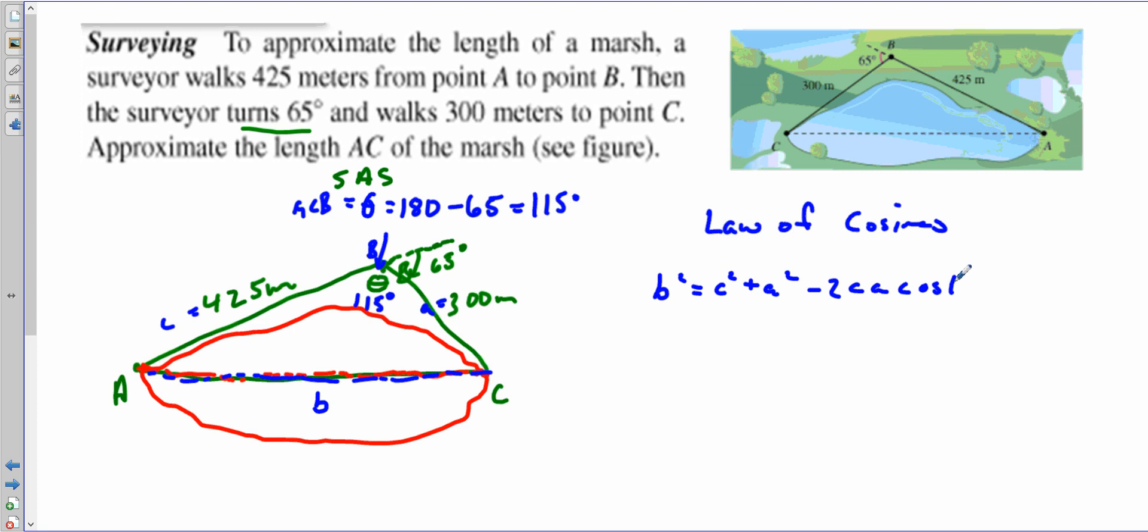We'll plug those values in and we know that b equals the square root of 425 squared plus 300 squared minus 2 times 425 times 300...